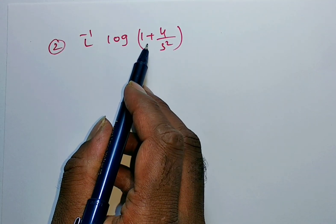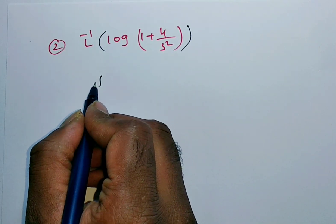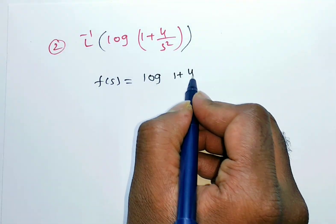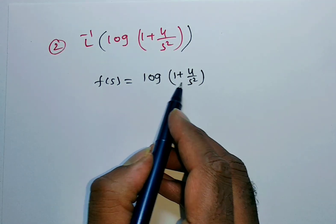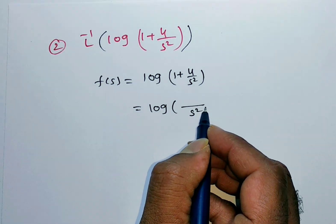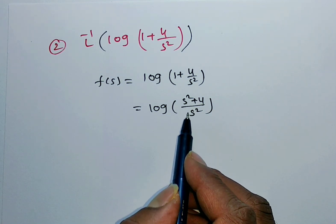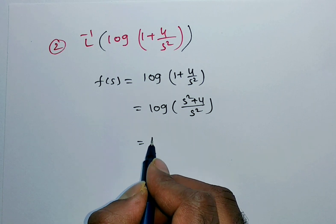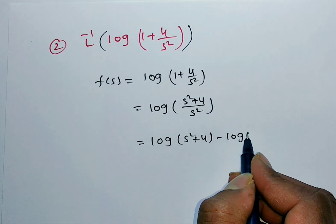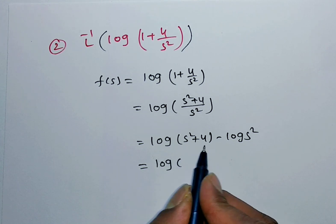For the second problem, L inverse of log of 1 plus 4 by S squared — this is in the form L inverse of F of S. So F of S equals log of 1 plus 4 by S squared. Taking LCM: this becomes log of S squared plus 4 by S squared, which is log of S squared plus 4 minus log of S squared, or log of S squared plus 4 minus 2 log S. Note: you cannot split the log when there is addition inside.